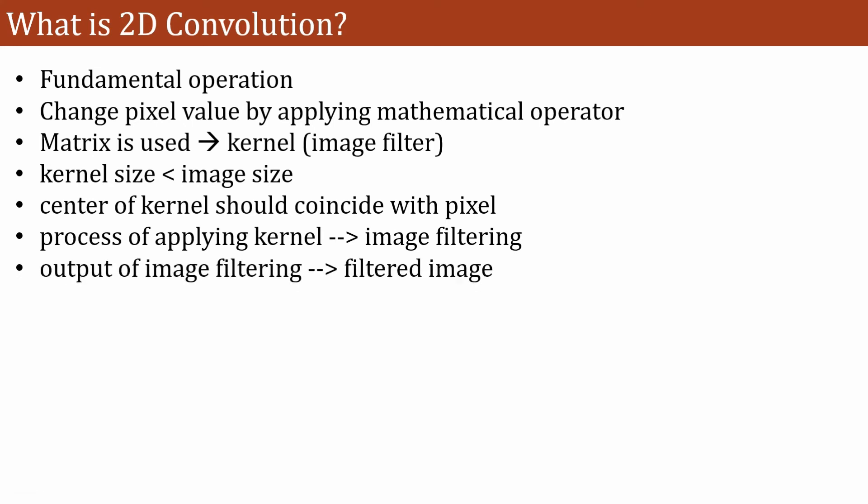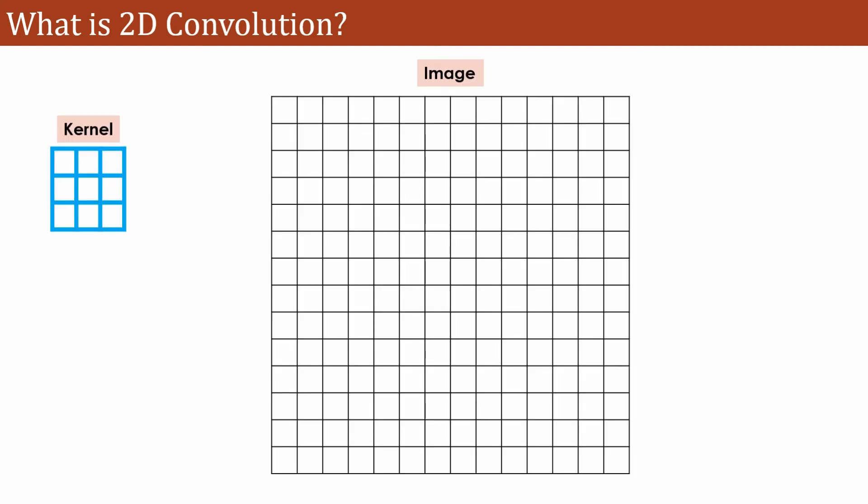The output that we obtain out of this is known as a filtered image. Here you can see this is a sample kernel provided here designated with K. Let us understand that the kernel is one grid and the image is another grid, meaning these two are the matrices that contain certain pixel values. But for simplicity I have kept all of them as blank. Now the kernel is kept over the image.